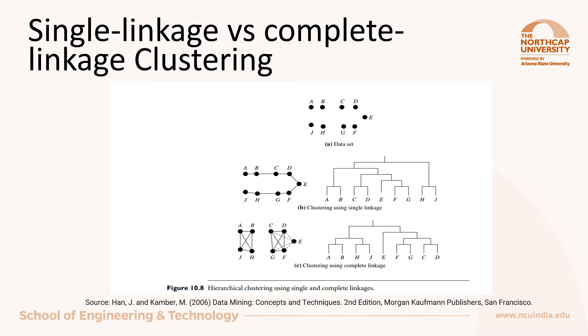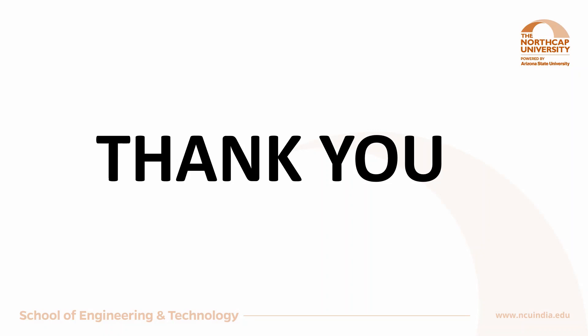If we compare single linkage and complete linkage clustering for this kind of data set, single linkage clustering will produce a long chain kind of structure, whereas complete linkage clustering will produce spherical clusters. Out of these four types of linkages — single linkage, complete linkage, average linkage, and centroid linkage — the average linkage type of clustering will be less affected by outliers. That's all about the session today. Thanks for watching.